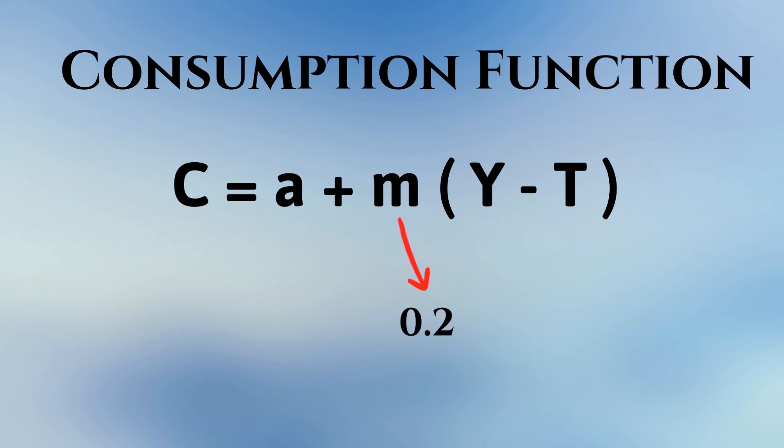If M is 0.2, it means that 20% of income is used for consumption.